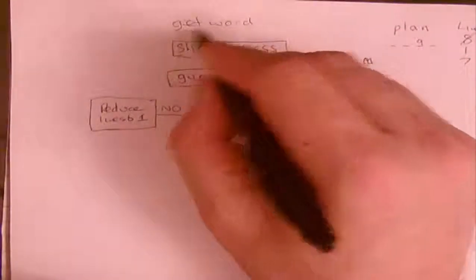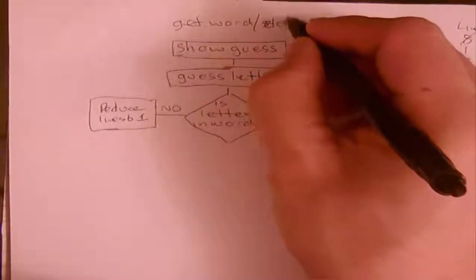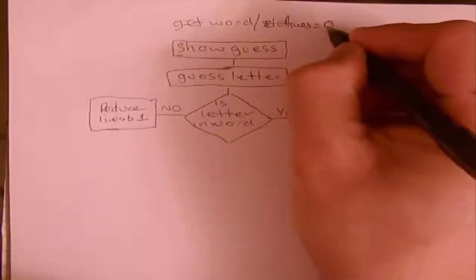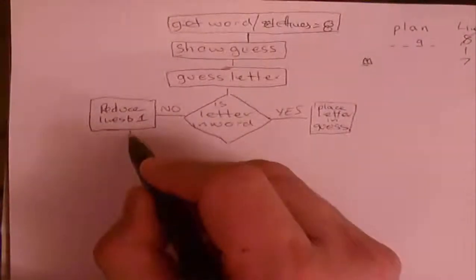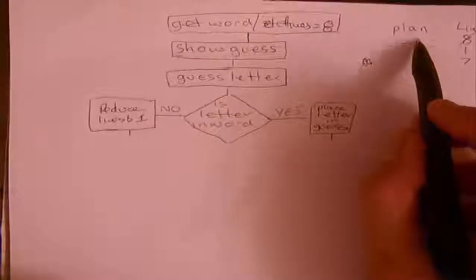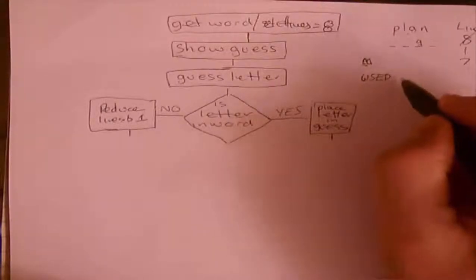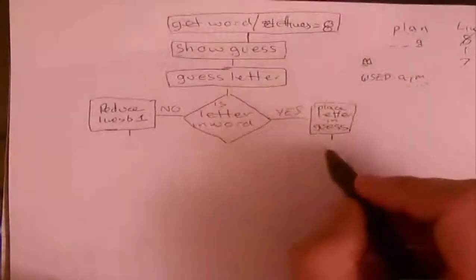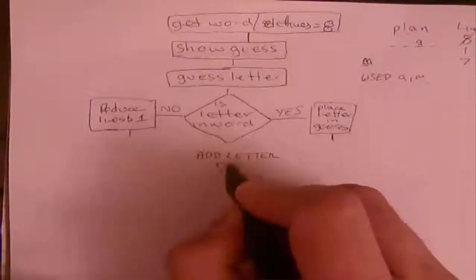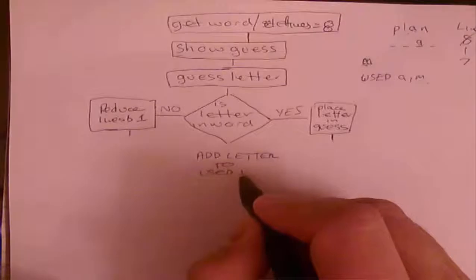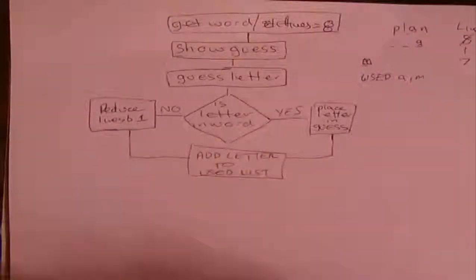Up at the top, as well as getting the word, I also need to set lives — set lives equal to eight as my starting point. Then, regardless of whether the letter was in the word or not, we compile a list of used letters, so we add the letter to the used list. Those two branches come back together because it doesn't matter which way we went.